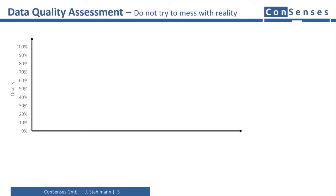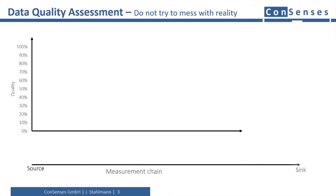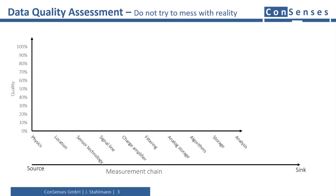The second axis is the measurement chain. Normally, measurement has a clear direction from source to sink. The core assumption is that the system behaves always deterministically and there is always a reason for scrap, breakdowns, or failures.